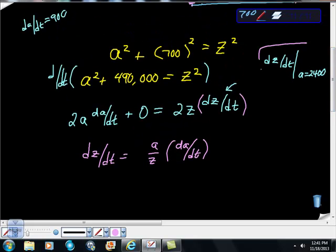Remember, we want dZ/dt when A is 2,400. So we want dZ/dt when A is 2,400.